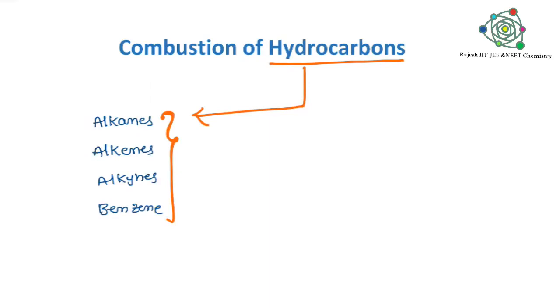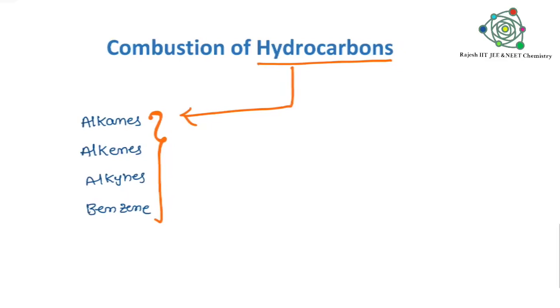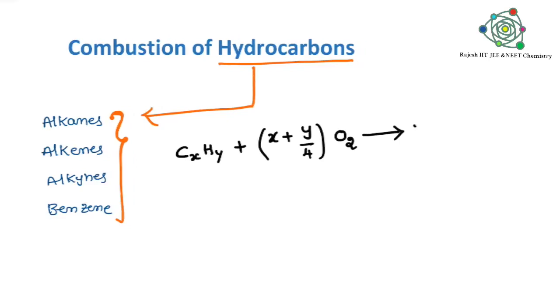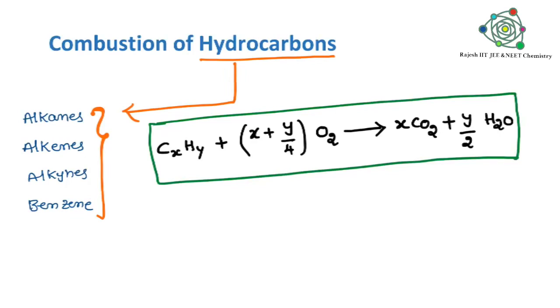Now if you want to write a balanced combustion reaction of hydrocarbons, just you need to remember one simple expression. This is very easy, we can remember there is no doubt in that. According to this expression: CxHy plus (x plus y/4) moles of oxygen gives x moles of carbon dioxide and y/2 moles of water.